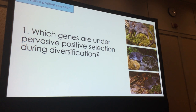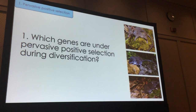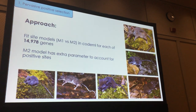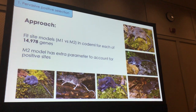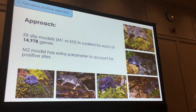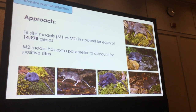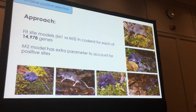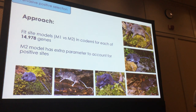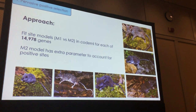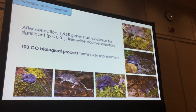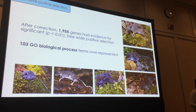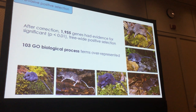Coming to the first question — which genes are under pervasive positive selection during the diversification process — the approach we took was to apply site models in PAML and test this across all 15,000 genes. Essentially there are two separate models: one which allows for a category of sites under positive selection and one which doesn't, and you can do a likelihood ratio test to see which fits each of the 15,000 genes. We found that after correction, almost 2,000 genes from the 15,000 set had significant evidence for tree-wide pervasive positive selection across the diversification of murine rodents.